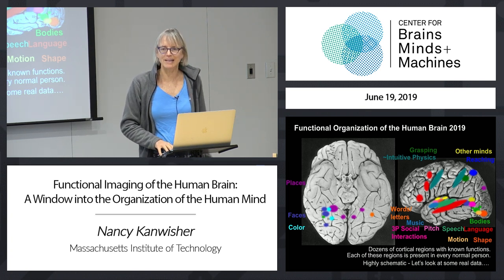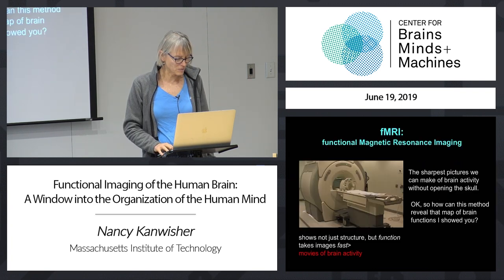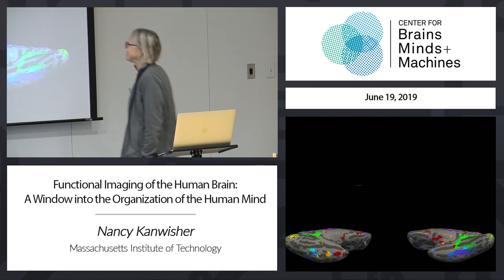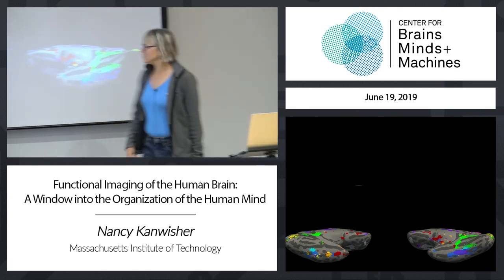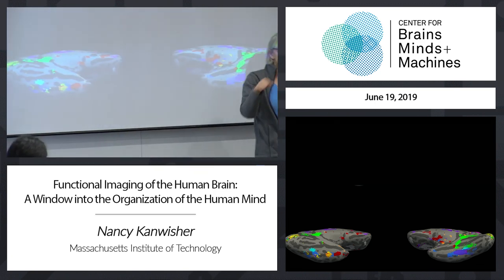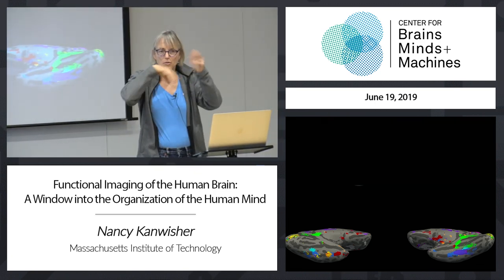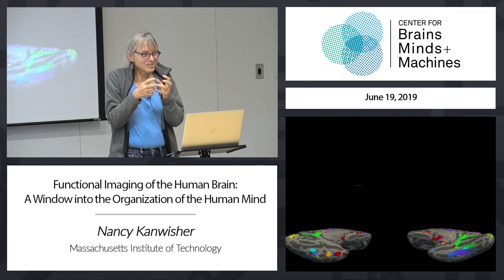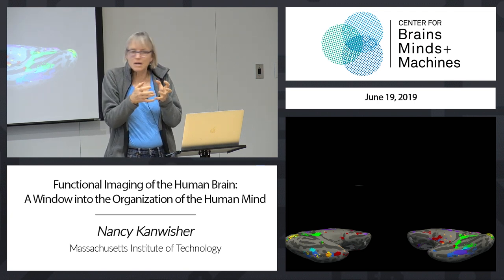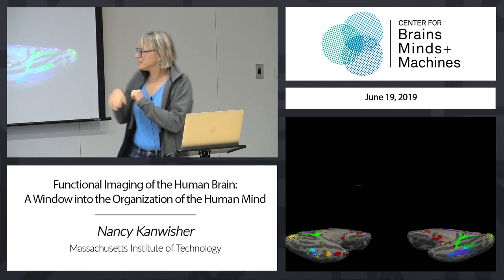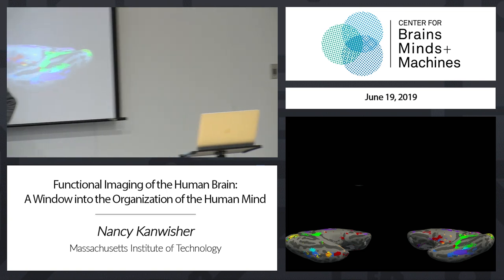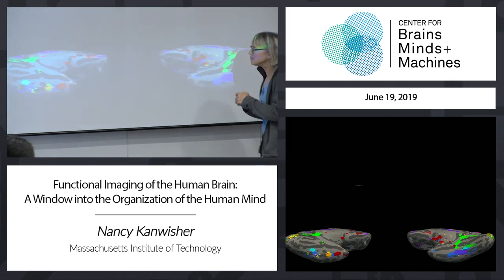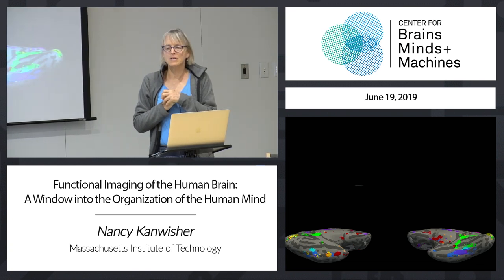Let me show you what actual data looks like. Here is one of my current lab techs — the bottom of his brain. This is his right and left hemisphere, back and front. It's all smooth because we've mathematically unfolded the cortex, which is normally crumpled up. Cortex is a sheet the size of a large pizza; to fit in your head you have to crumple it. So this is a mathematically inflated brain — dark bits were inside folds, light bits were on the surface. It shows the bottom surface with regions having different functions.